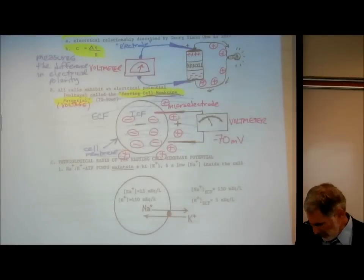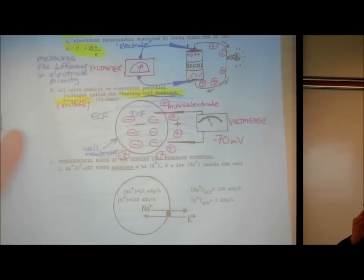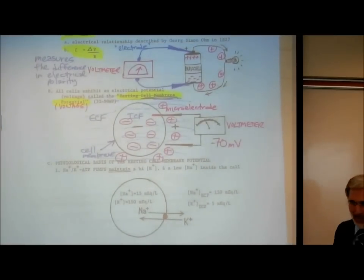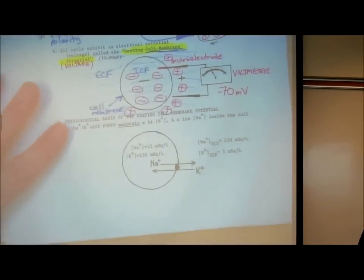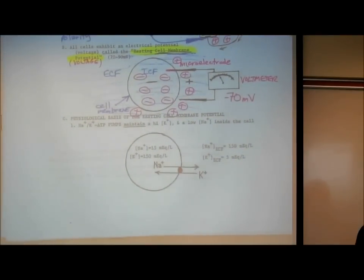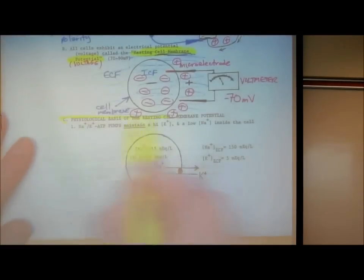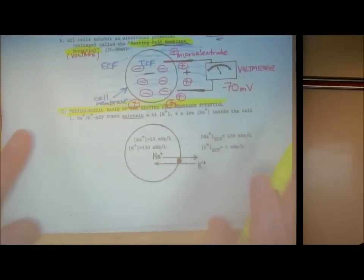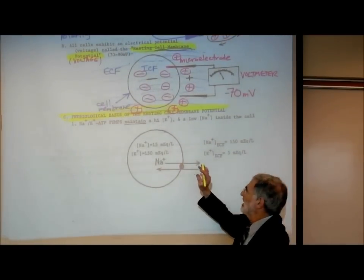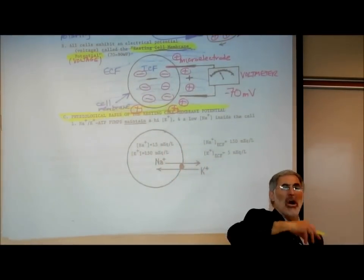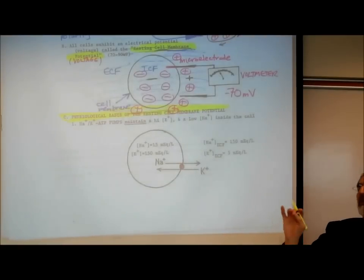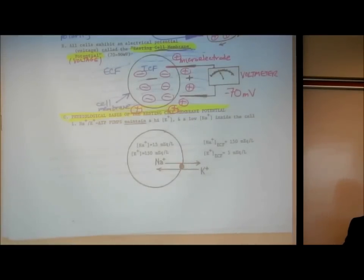So now, even though each cell is just a tenth of a volt, there are a lot of cells. What we want to understand now is: what's the basis for this voltage? Where does it come from? The first step in understanding where this voltage comes from is that the electrolytes inside the cell are significantly different from those outside. The two most important electrolytes in your body are potassium and sodium.